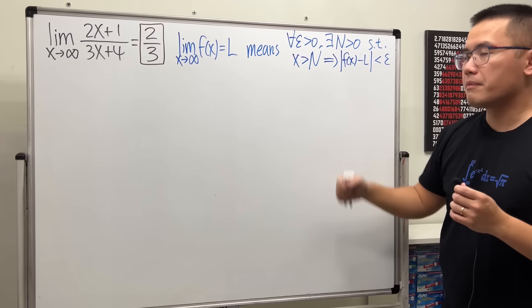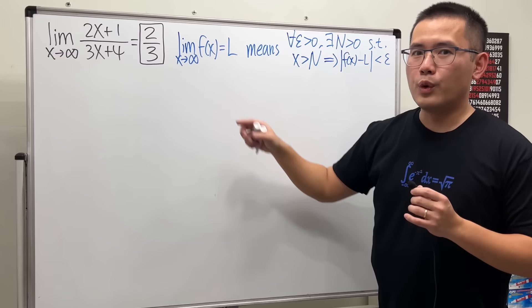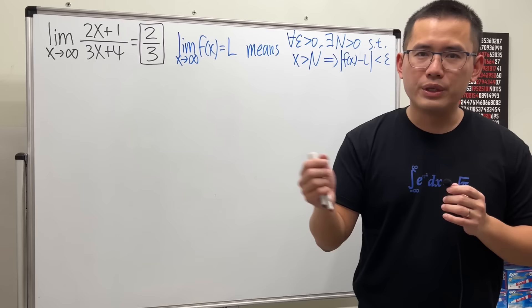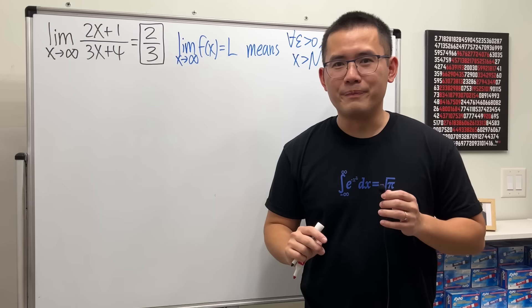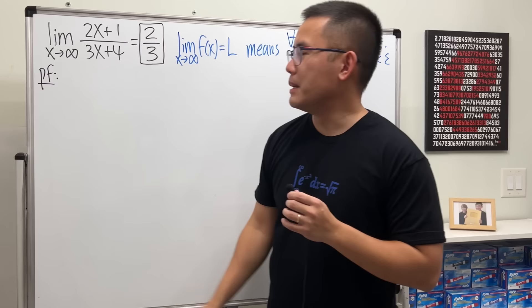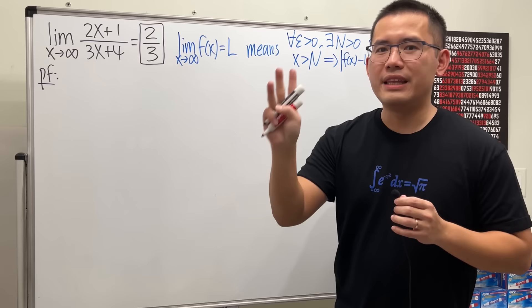One more thing before we do the proof: this is very common when we talk about sequences, because when we have a sequence it only makes sense to take the limit as n goes to infinity — that's the sequence A_n. If you want to write a proof easily, these are the four words to remember. But before anything, as always, put down what you're proving first.